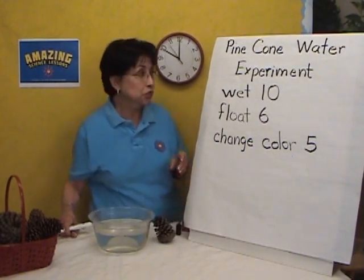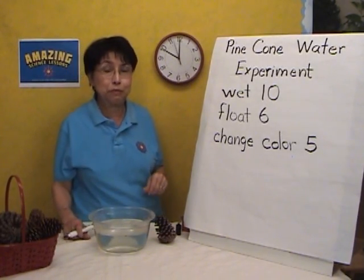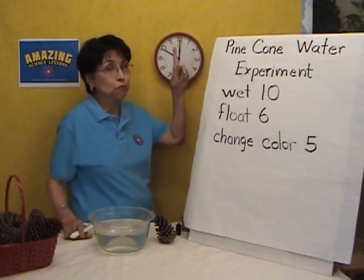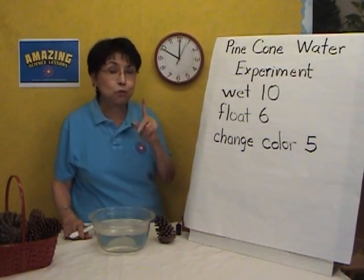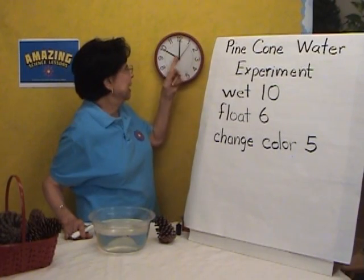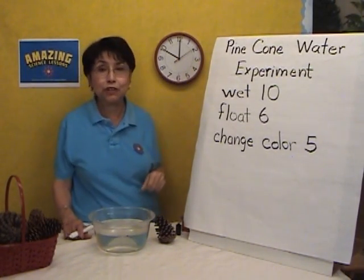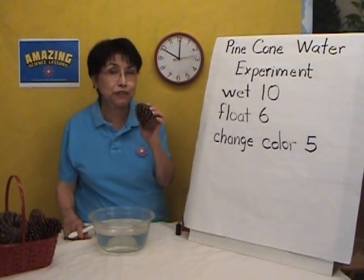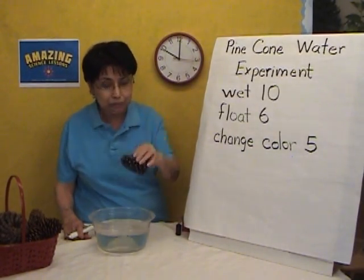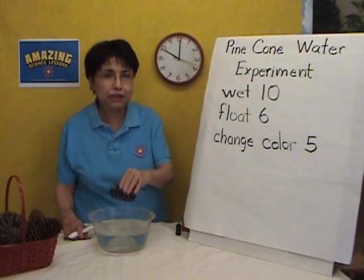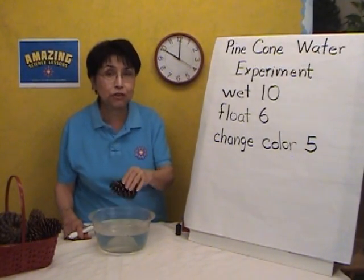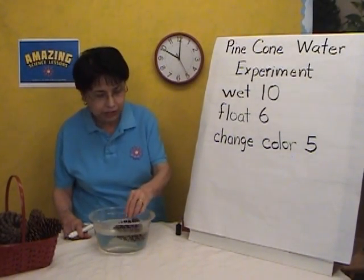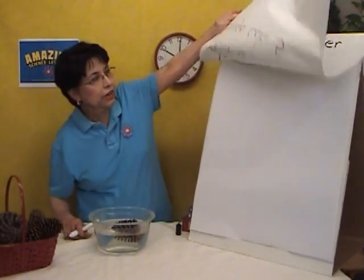In kindergarten and even in pre-K, it's very important that you start talking about time. I'm going to tell them: look at my clock. We've been talking about the big hand — the big hand is the one that moves faster all the way around. Where is the big hand right now? It's on the 12. So we're going to observe our pine cone for 15 minutes. I'm going to dip it in water, and while it's being dipped in water, you're going to go to your journals and draw your pine cone.